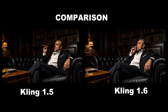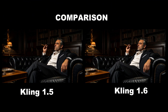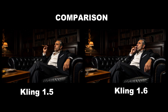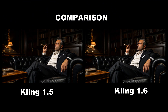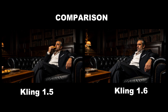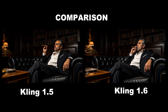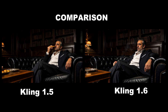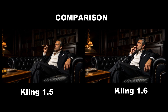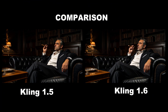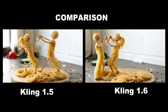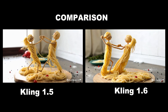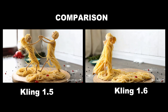Next, using an image of a mafia don sitting on a black leather sofa, videos were generated without any prompt to see how the AI performs. In version 1.6 it understands what's happening in the image — the person is smoking a cigar. But in version 1.5, the cigar turns into something like a sandwich or burger that he ends up eating — a very weird result. Then, using an image of a spaghetti couple dancing, version 1.6 handled it very well while version 1.5 just added a panning effect.